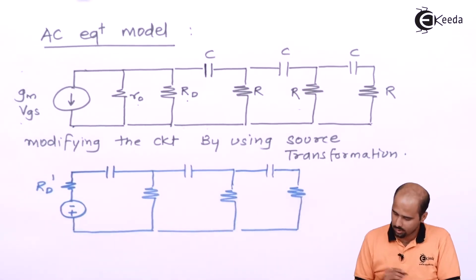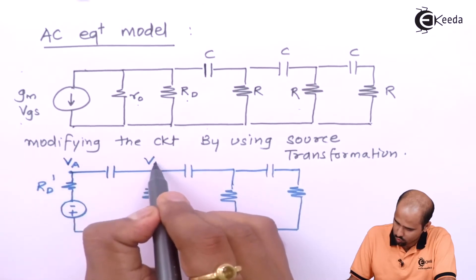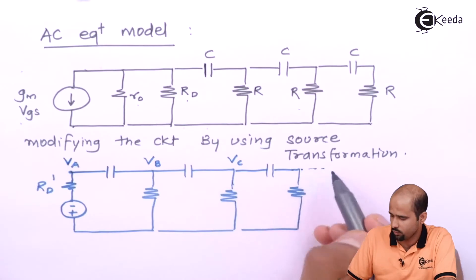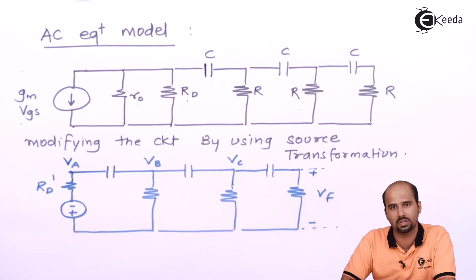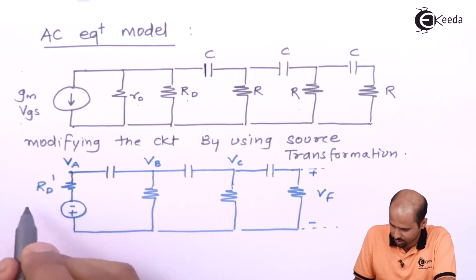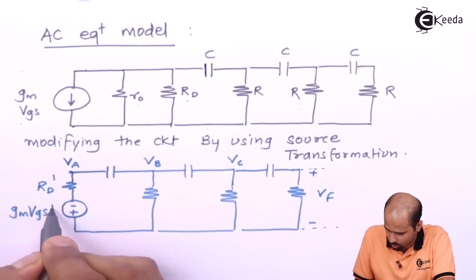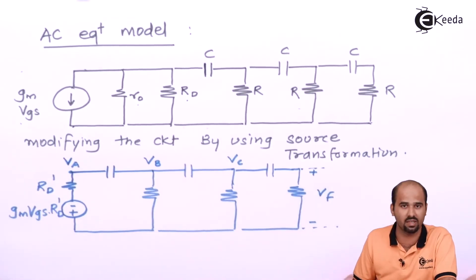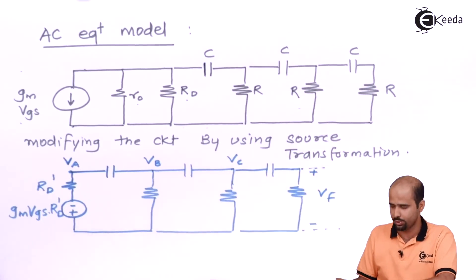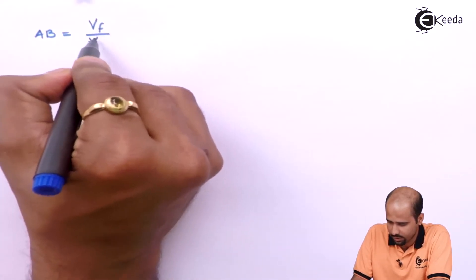What we have got is: let's say VA, VB, VC, and this is nothing but VF. This value of voltage is nothing but GM·VGS into RD-dash. So far we have three loops, and I want this time the voltage-by-voltage ratio because we are dealing with MOSFET or JFET, which is a voltage-controlled device. So AB, whatever we are getting, is nothing but VF divided by VI.